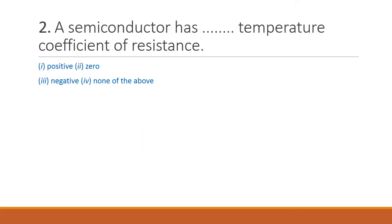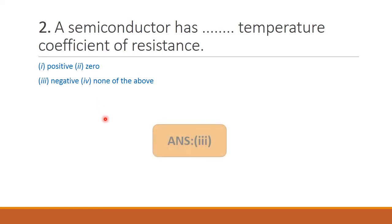Next question: a semiconductor has dash temperature coefficient of resistance. This is one of the important properties. It has a negative temperature coefficient of resistance, because as temperature increases, conductivity increases and resistance decreases. Therefore option 3 is the right answer.